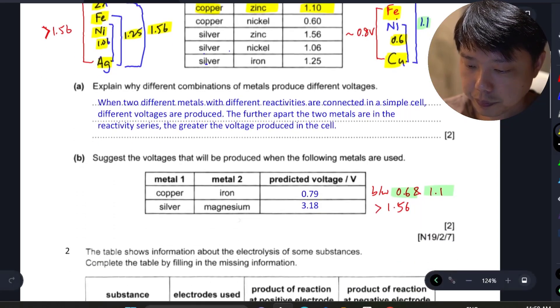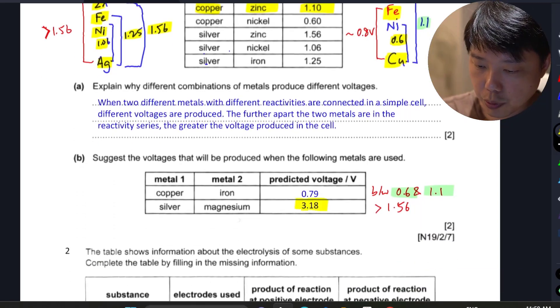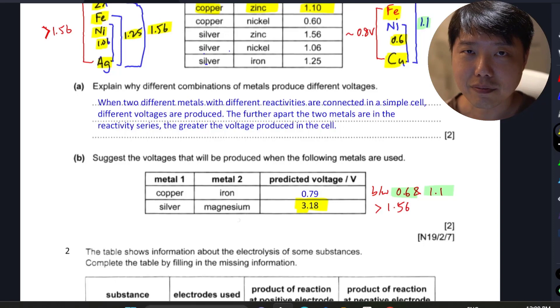Any value you propose like 2, 2.1, 2.2, or 2.3 volts - anything above 1.56 volts will technically be accepted. Of course, don't put 10 volts or something unreasonable. Anything below 4 volts that is greater than 1.56 volts should be considered correct.